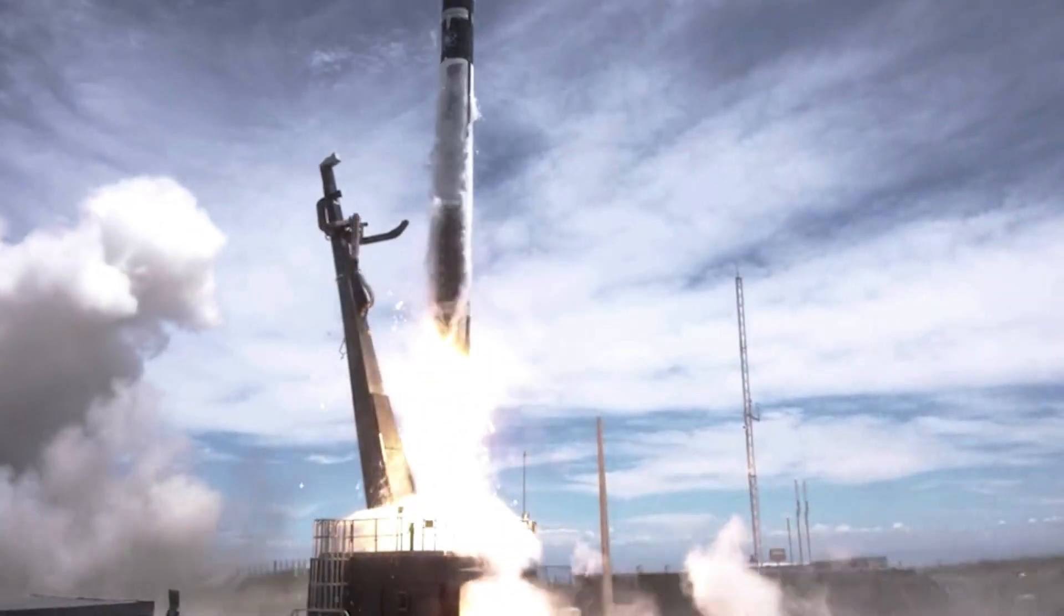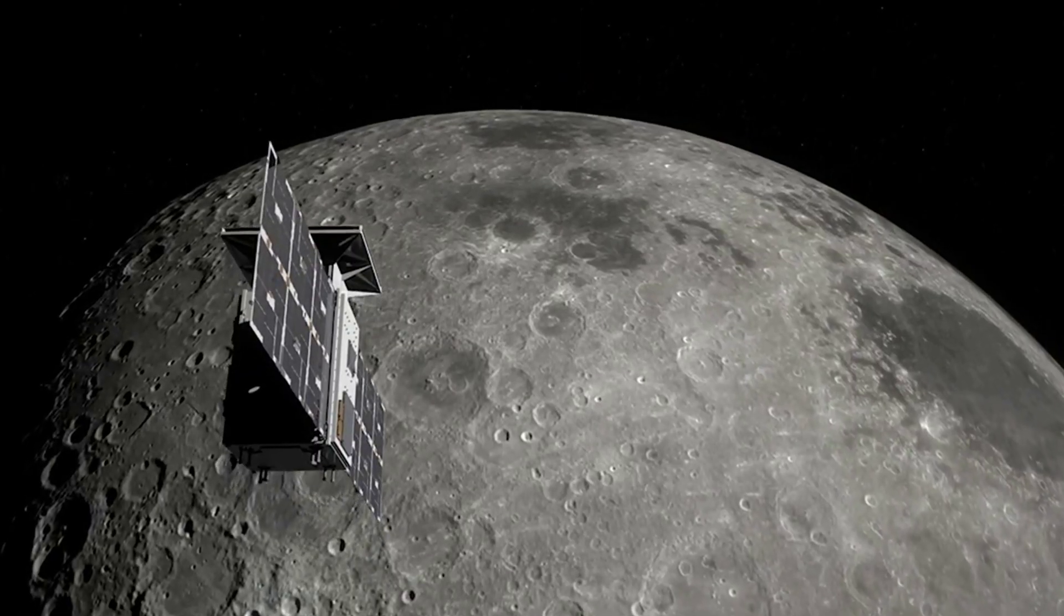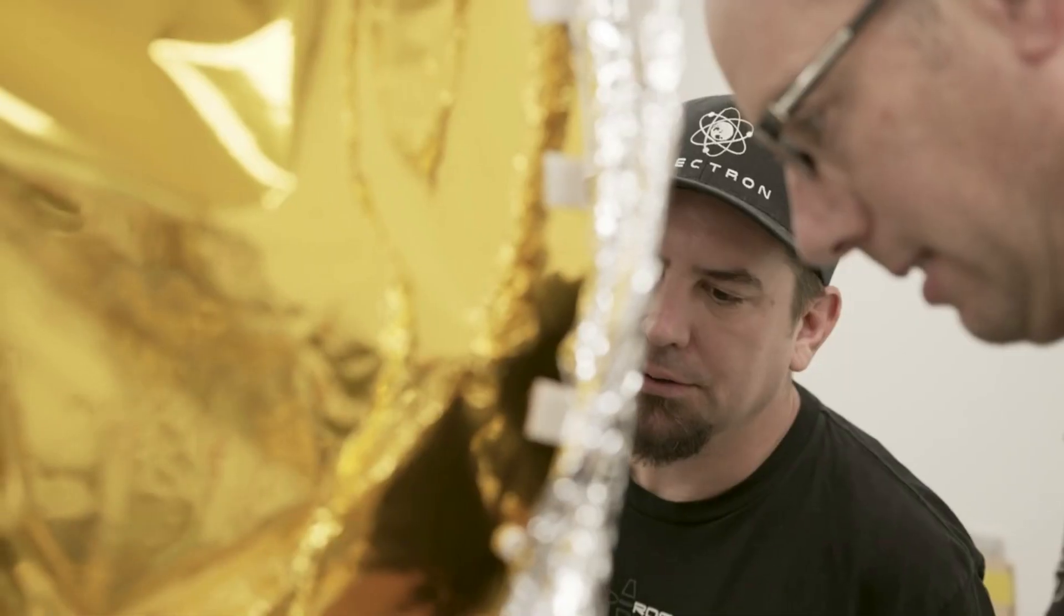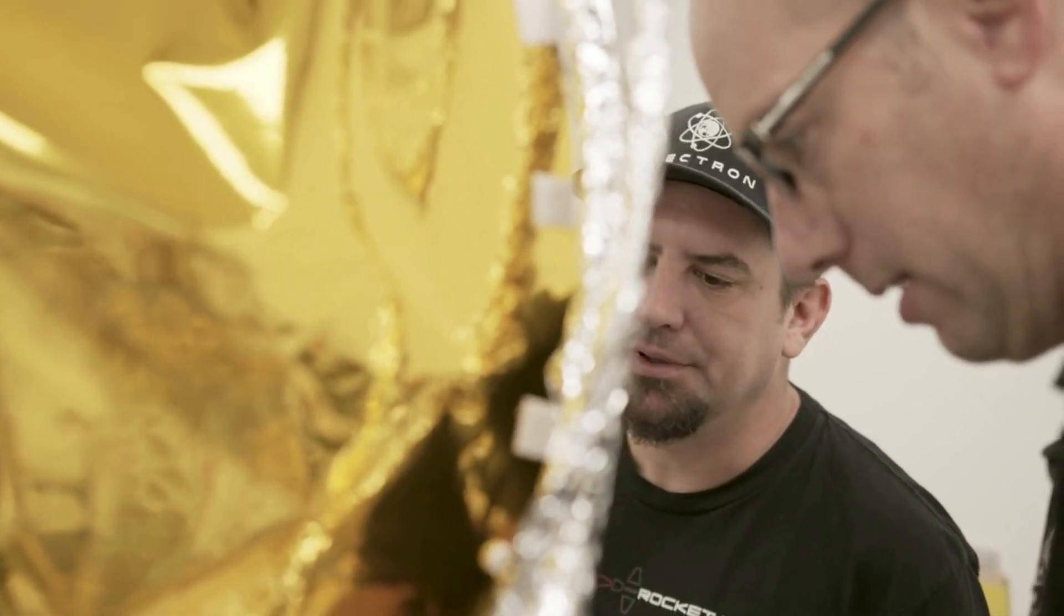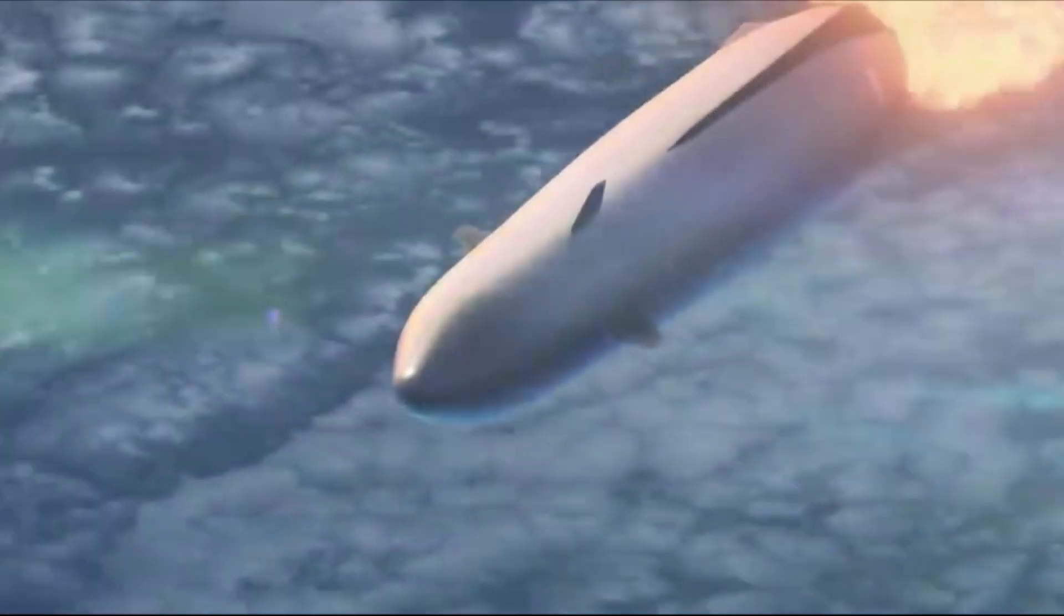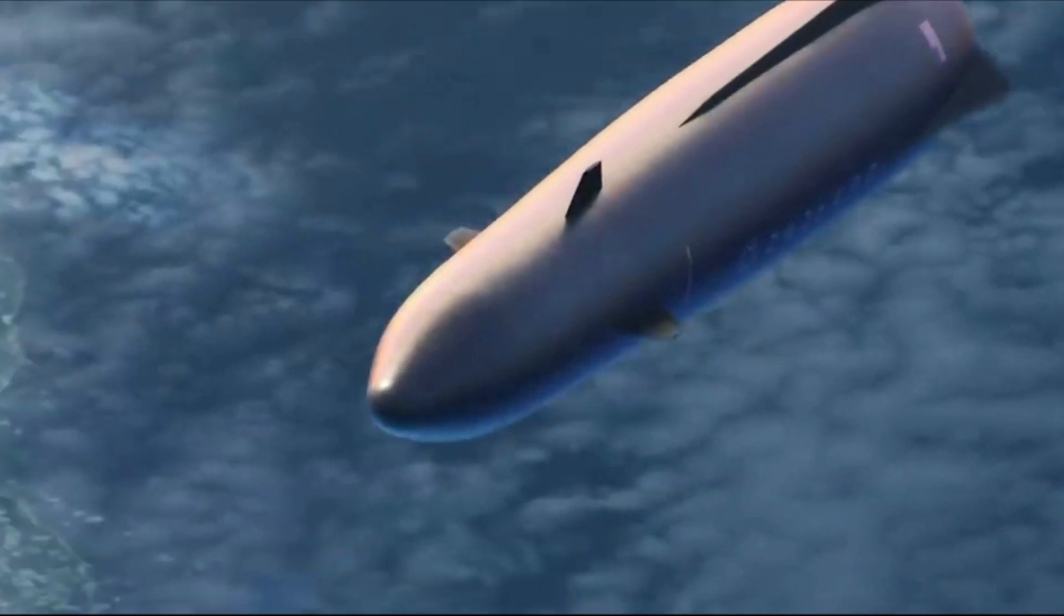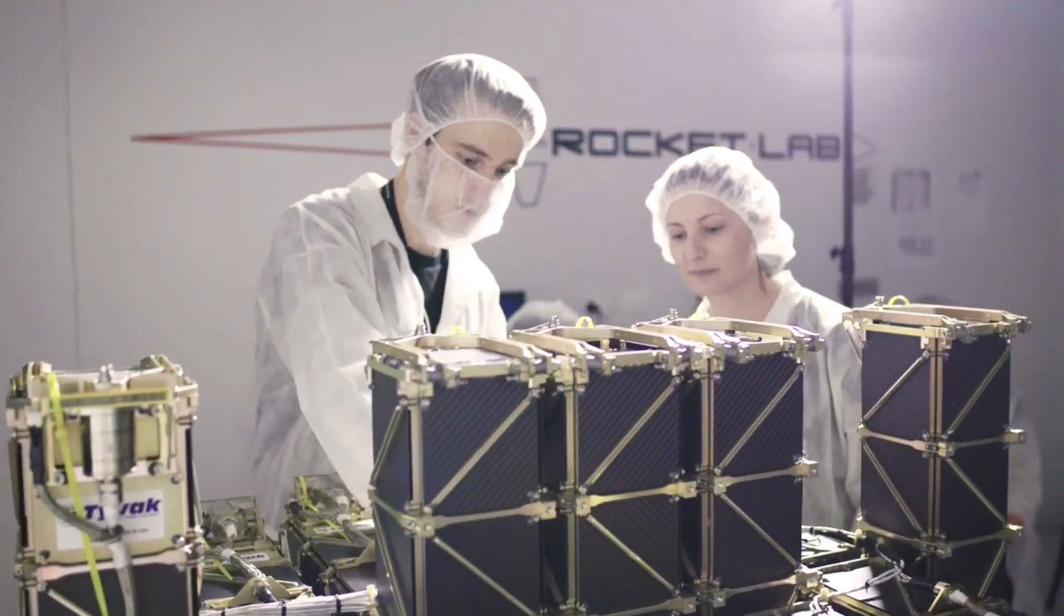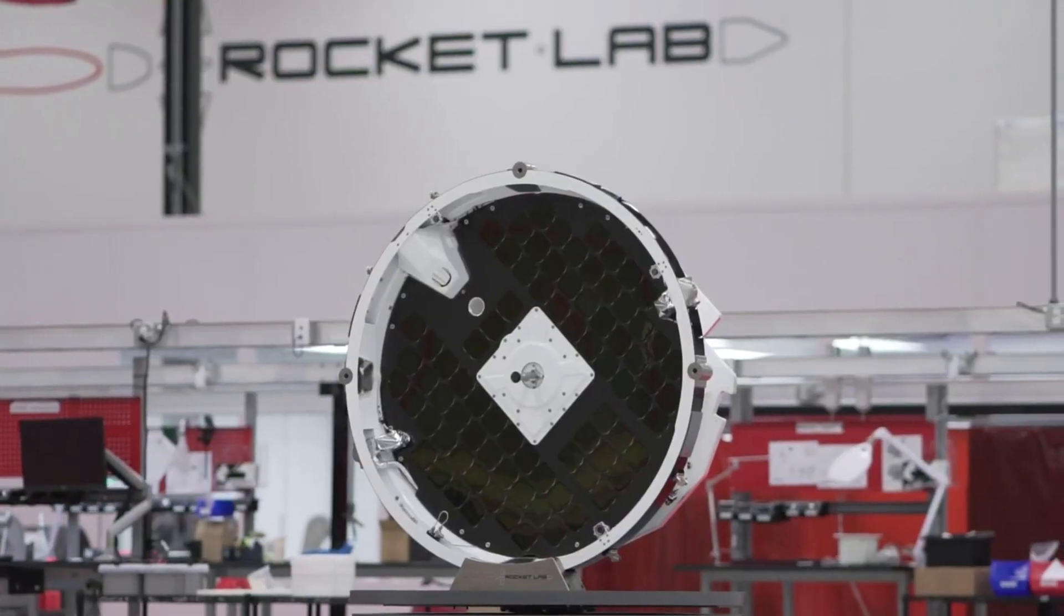Electron is already a proven and reliable launch vehicle, and we've demonstrated its adaptability with programs like reusability and our recent Capstone mission to the Moon for NASA, so we're no stranger to exploring expanded use cases for Electron. Neutron builds on Electron's capabilities with a much larger payload capacity and is designed for frequent reflight, making it a perfect fit to enable fast deployment of vital resources while eliminating the on-route stops and air refueling required by air cargo solutions.